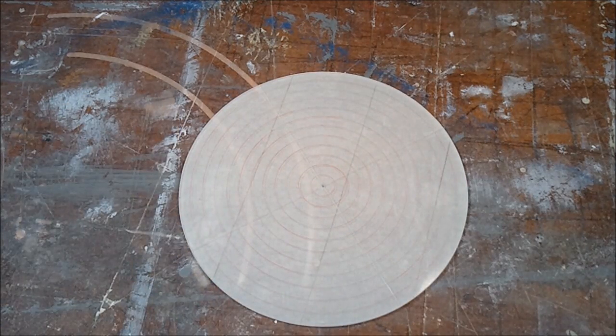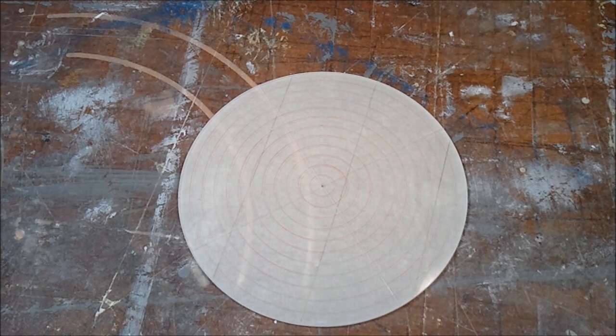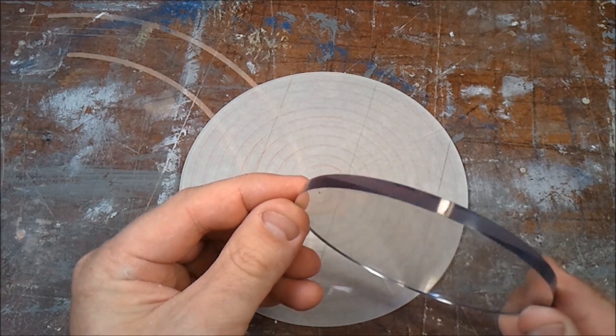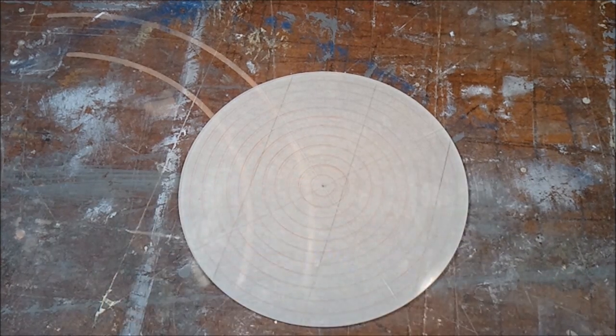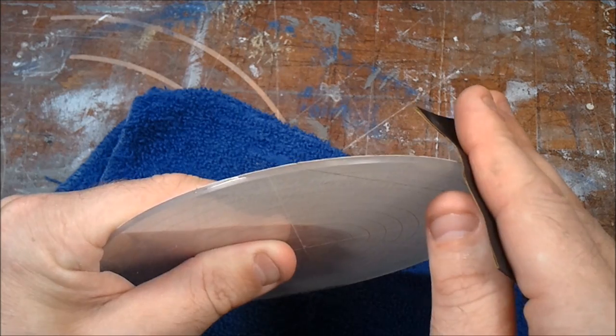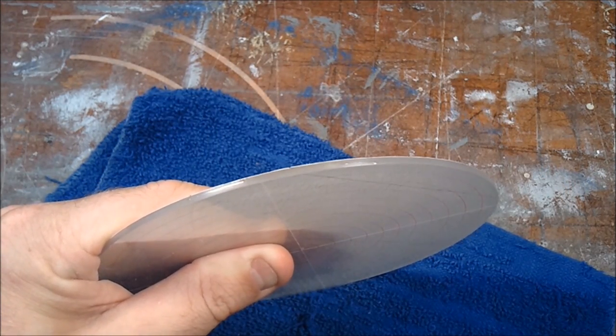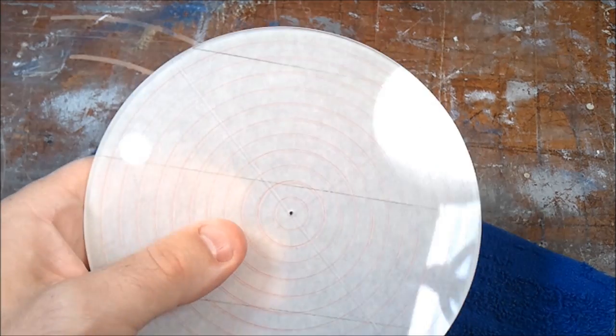Believe it or not, acrylic glass can be sanded down to a high gloss, just like any piece of wood. I sanded this edge down to 2000 grit, and then buffed it. So it's a good idea to have this edge polished as nice as you can get it, because the more light that gets transmitted onto the inside, the better its visibility will be.